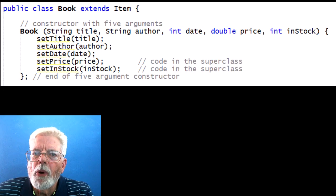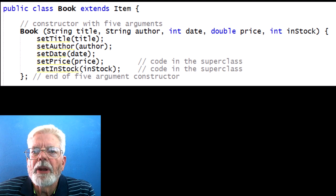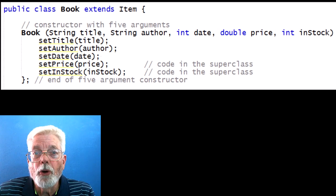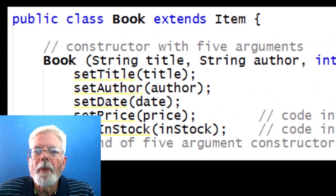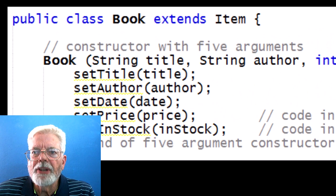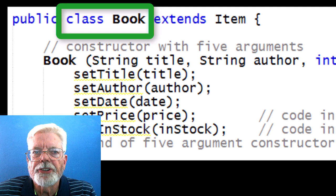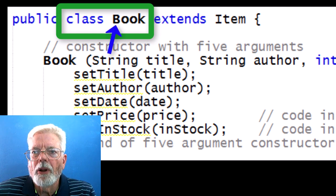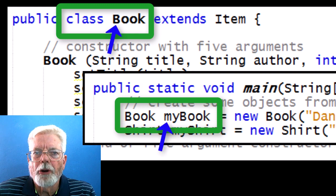Object-oriented programming is based on the concept of objects which can contain data and executable code. The structure and form of an object is defined by a piece of code called a class. Names of classes should start with a capital letter while names of objects should start with a small letter.